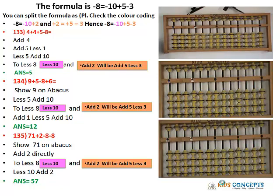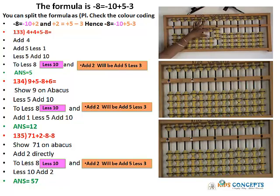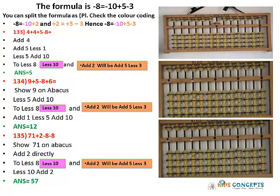Let's repeat it again. 4. Add 4 — Add 4 will be Add 5, Less 1. Add 5 — Add 5 will be Less 5, Add 10. Less 8 — Less 8 will be the combination formula: Less 10, Add 5, Less 3. Answer is 5.